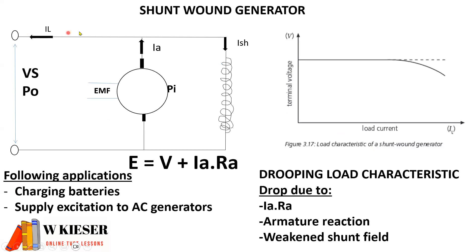For the shunt-wound generator, the field coil is connected in parallel to the armature. It's still a generator — mechanical in, electrical out — producing current going to the supply with a small amount going through the shunt winding. The load characteristic curve remains somewhat constant but tends to drop off due to armature reaction (IA times RA) and a weakened shunt field.